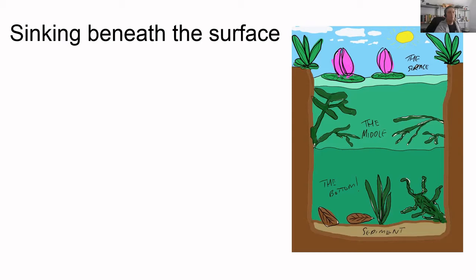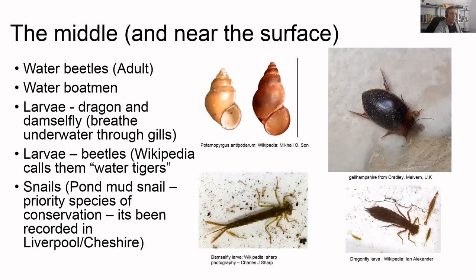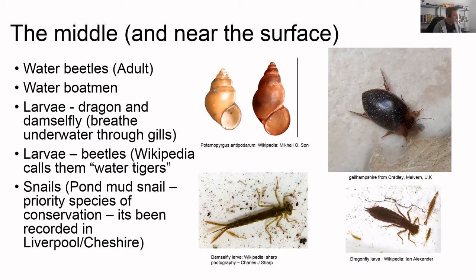Going below the surface, you have to be quite broad about what you cover because some creatures travel between different depths depending on whether they're hunting or herbivores eating plants. Snails, for example - if there are macrophytes or aquatic plants you might find them in the middle; if it's just sediment they might be at the bottom. The sort of things you'd see scooting around the middle or near the surface include water beetles and various larvae.